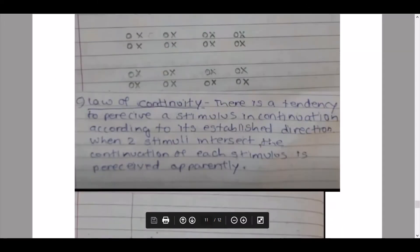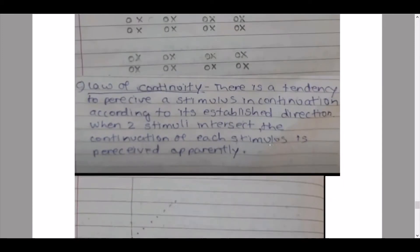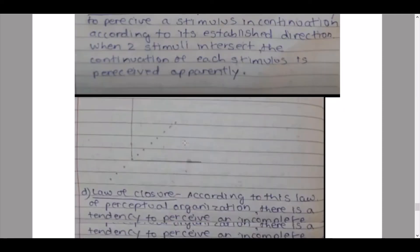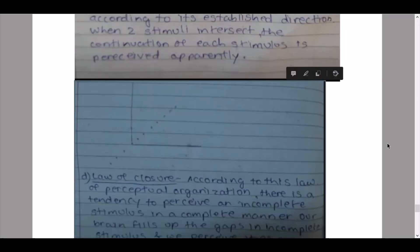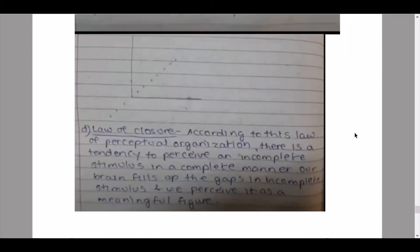Then we have the third law: law of continuity. There is a tendency to perceive a stimulus in continuation according to its established direction. When two stimuli intersect, the continuation of each stimulus is perceived apparently. So this is our diagram for that.